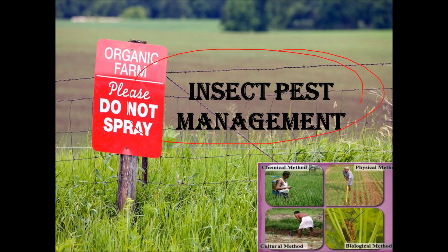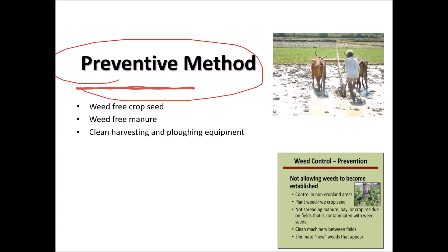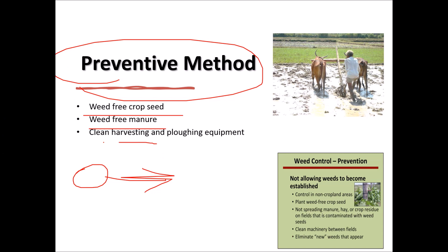For pest infestation, the combined method is called Insect Pest Management (IPM), which includes chemical, physical, cultural, and biological methods. Talking about the preventive method: first, use weed-free crop seed — if the seed is good, there will be no infestation. Second, use weed-free manure. Third, ensure clean harvesting and plowing equipment. In this way you can control the spread or initial start of an infestation.